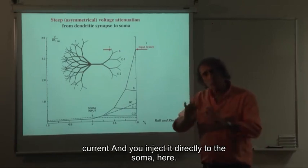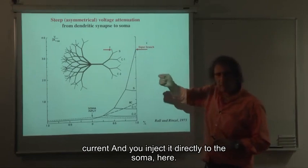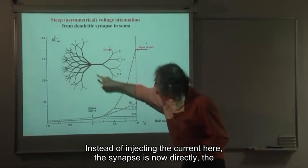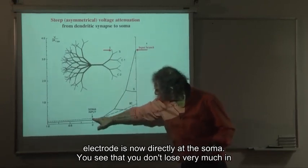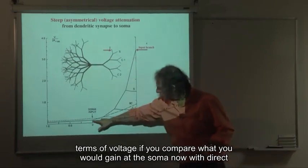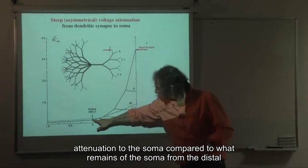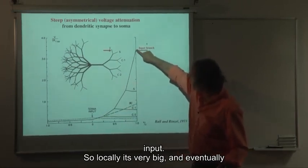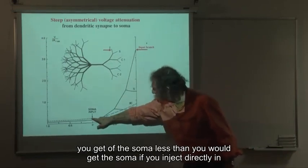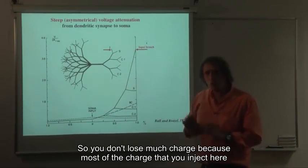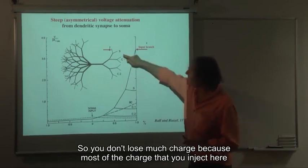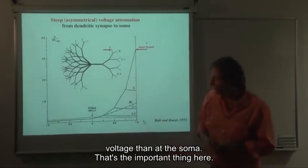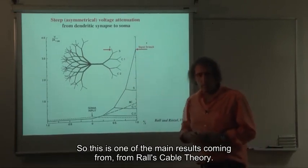The other interesting property: if you take the same synaptic current and inject it directly to the soma instead of at a distal location, you don't lose very much in terms of voltage. If you compare what you gain at the soma with direct injection versus what remains at the soma from the distal input, locally the distal synapse is very large, but you get less at the soma than if you injected directly. However, the difference is not so big — most of the charge that you inject distally eventually reaches the soma. But locally, you have much larger voltage than at the soma. This is one of the main results from Rahl's cable theory.